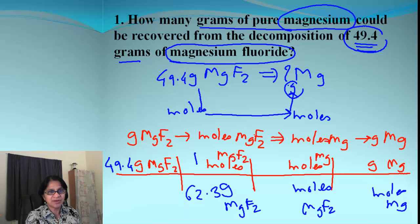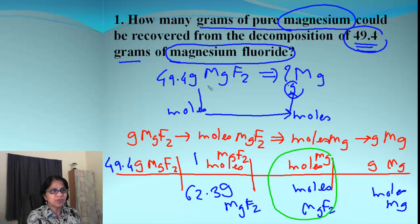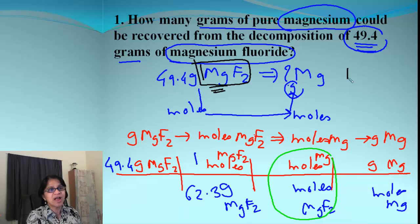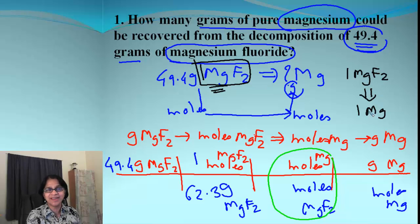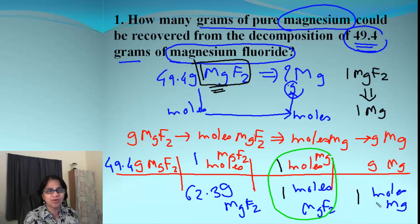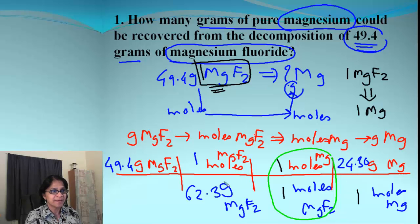This is the critical part: we have a ratio of moles of MgF₂ to moles of Mg. To get that ratio, we look at the formula — 1 mole of MgF₂ contains just one Mg atom, so the ratio is 1 MgF₂ to 1 Mg. If it were fluorine it would be 2, but for magnesium it is simply 1. Then for the moles-to-grams conversion for magnesium, 1 mole of Mg has a molar mass of 24.30 grams.